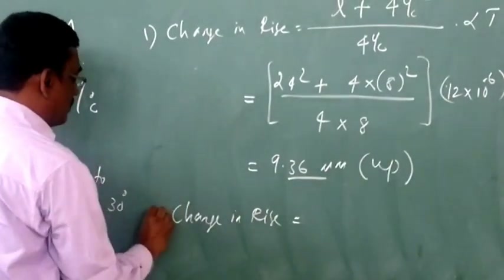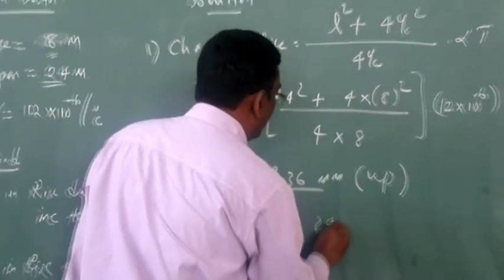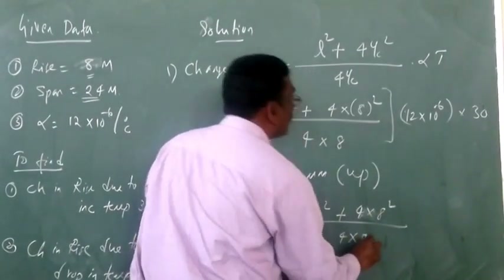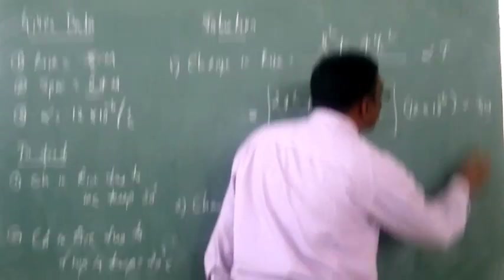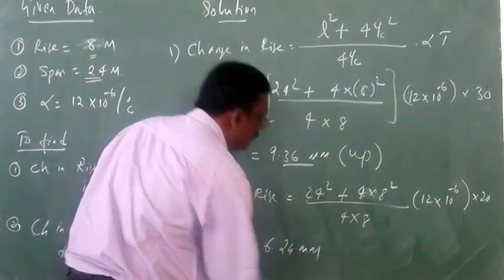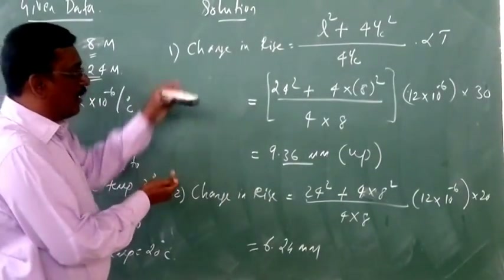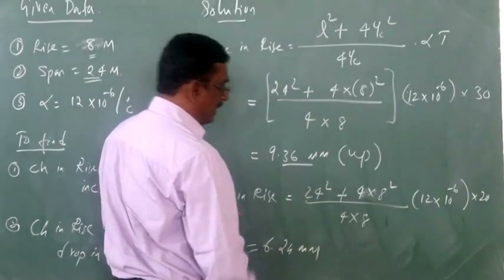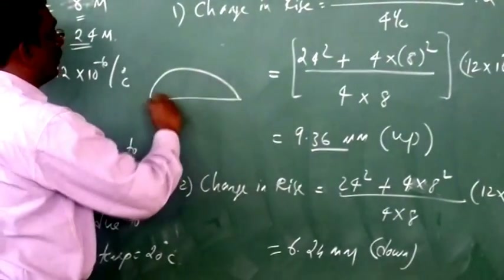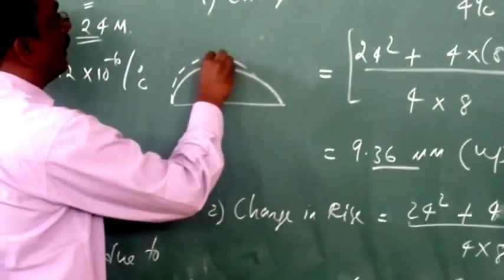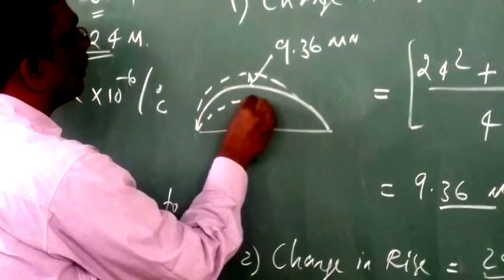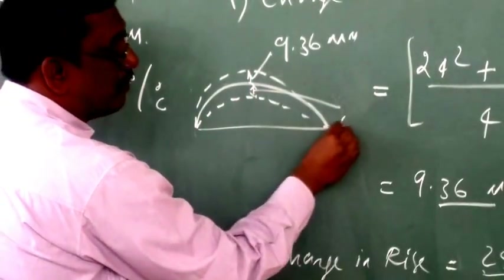This is case 1. Now for case 2 — the change in rise due to a drop in temperature of 20°C. Substituting the values: (24² + 4 × 8²) / (4 × 8) × 12 × 10⁻⁶ × 20, which gives approximately 6.24 millimeters. Since this is a drop in temperature, the arch shortens and the rise will come down — the rise moves in the negative direction. So in summary, due to rising temperature the arch crown goes up by 9.33 mm, and due to the drop in temperature the arch crown comes down by 6.24 mm.